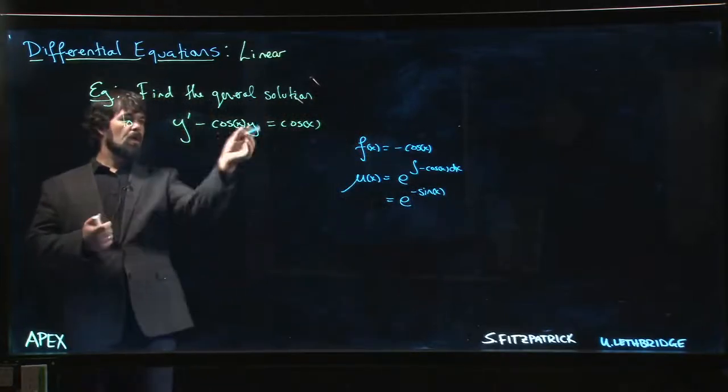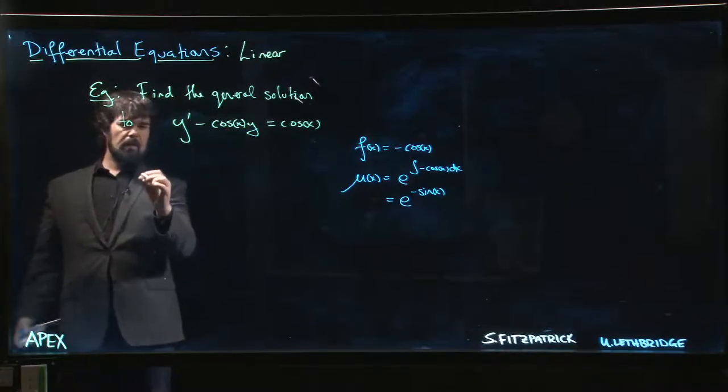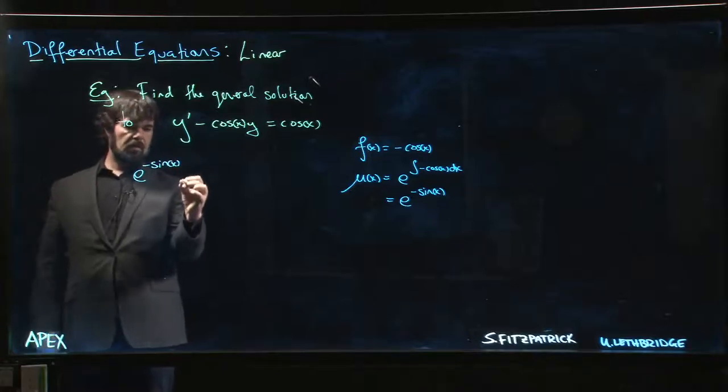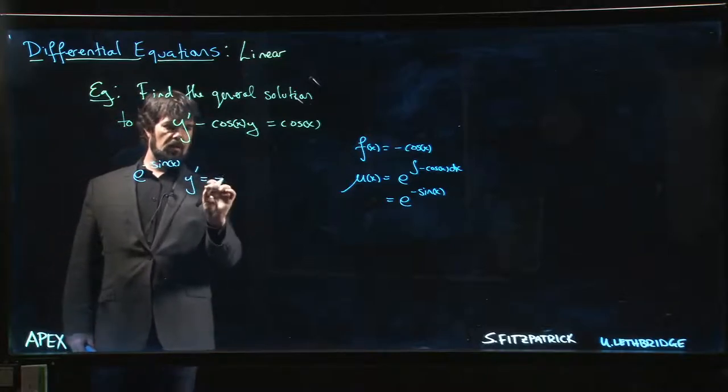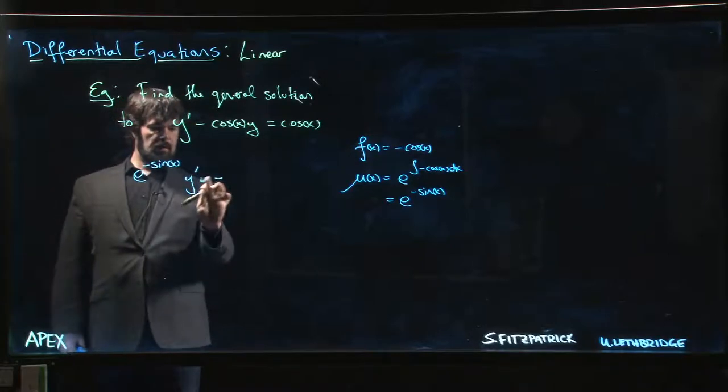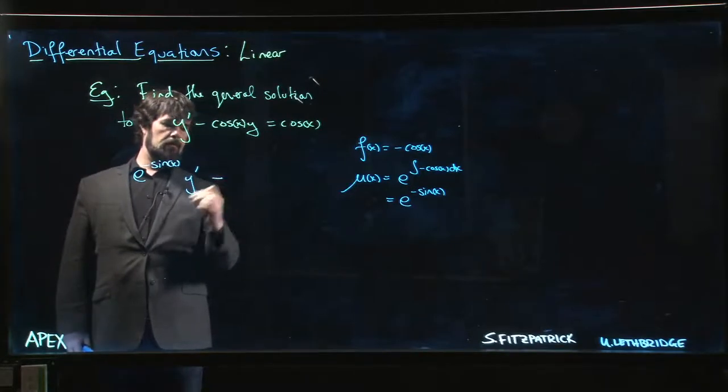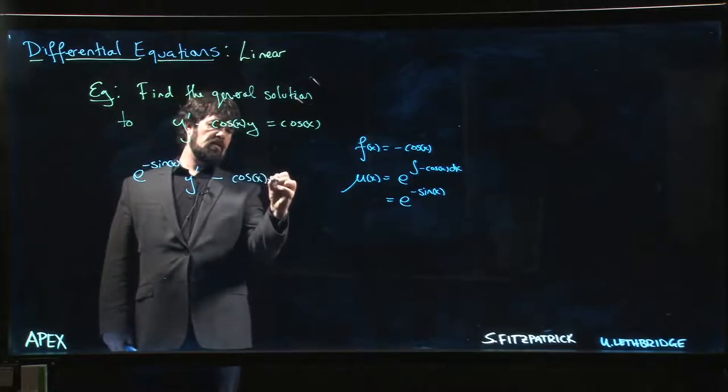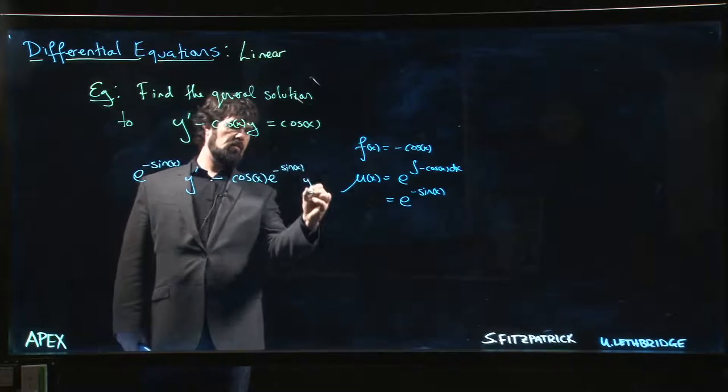So we multiply both sides by the integrating factor and we see what we get. We have e to the minus sine x times y prime is equal to minus... I don't want an equal sign there yet.